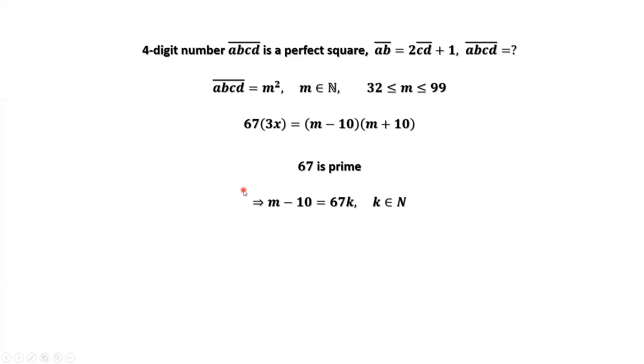This implies M minus 10 is divisible by 67 or M plus 10 is divisible by 67. This means M minus 10 equals 67 times K, K is a positive integer, or M plus 10 equals 67 times K, K is a positive integer.